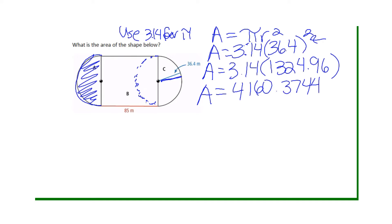Now I like to wait to round it to the very end to be more accurate. So this is the area of the two semicircles combined.